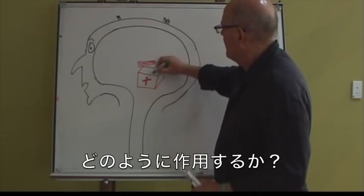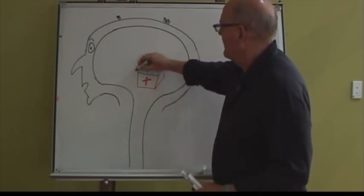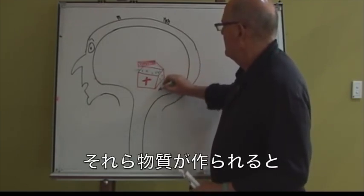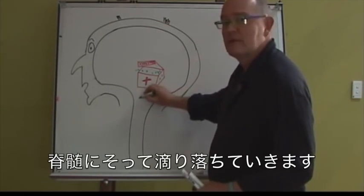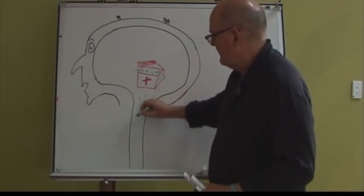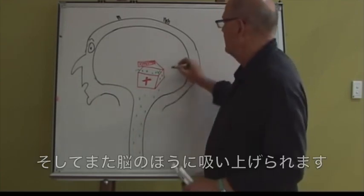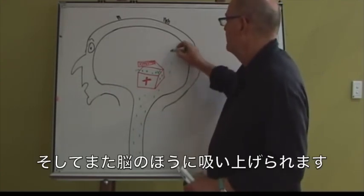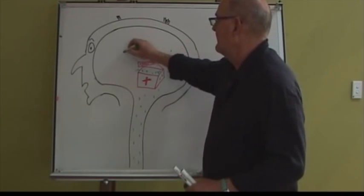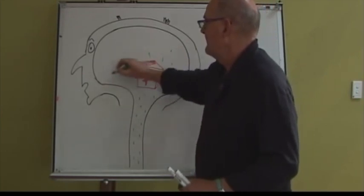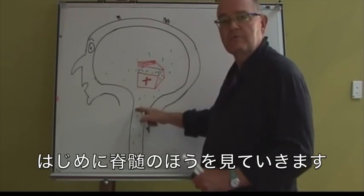How does it work? Well, these chemicals are made and they trickle down the spinal cord. They also trickle up into the brain. Let's look at the spinal cord first.